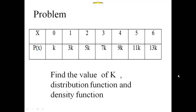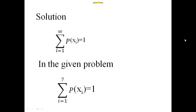In this problem the required values are K, the distribution function, and the density function. First we are calculating the value of K. For calculating K we are using the probabilities. We already know that in the probability mass function the sum of all probabilities is equal to 1. The formula is: summation i equal to 1 to infinity of P(xi) equal to 1.